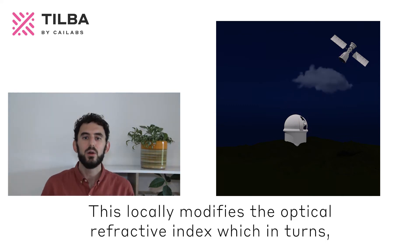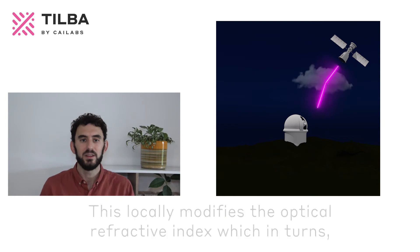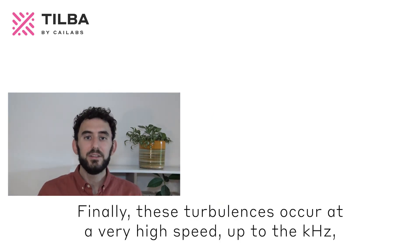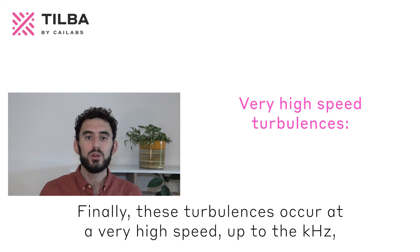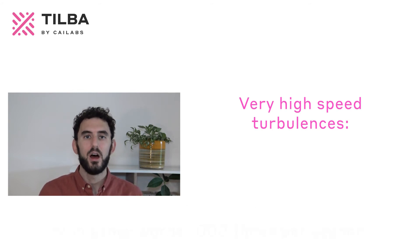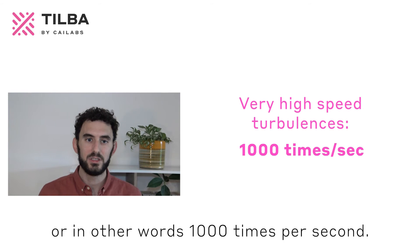This locally modifies the optical refractive index, which in turn impacts the light properties. Finally, these turbulences occur at a very high speed, up to the kHz, or in other words, 1,000 times per second.